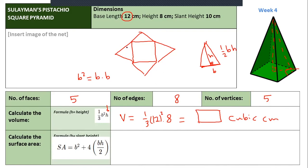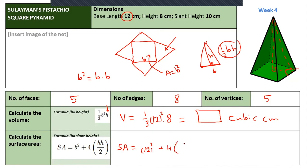Surface area is the sum of the areas of all faces. The square base has area B² (side length times itself). For each triangle, its area is half base times slant height, and we have four of them. So substitute: surface area equals 12² plus 4 times (12 times 10) divided by 2. The slant height is 10 — that's the height of the triangle, not the height of the pyramid. Find the result in square centimeters.